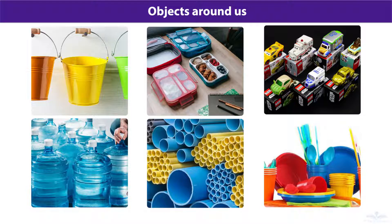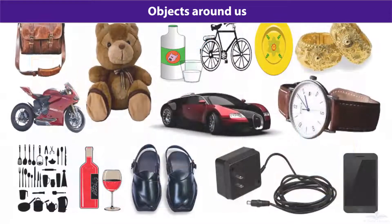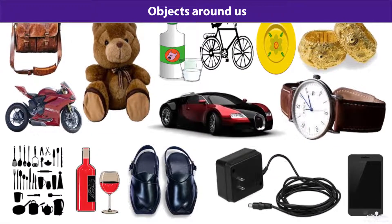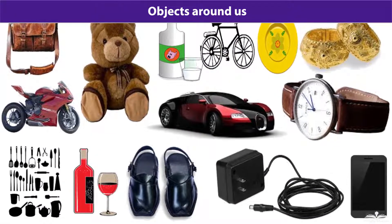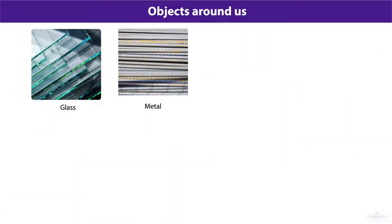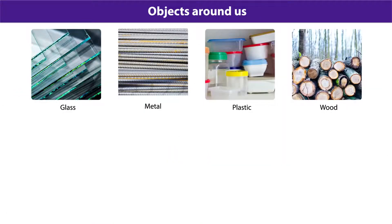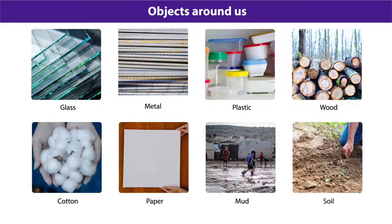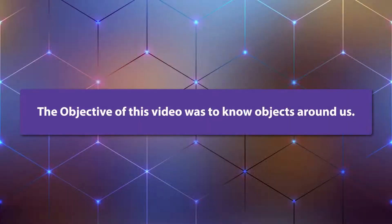There are so many ways to group objects around us. In these examples, we have grouped objects on the basis of their shape or the materials they are made from. All objects around us are made of one or more materials — these materials may be glass, metal, plastics, wood, cotton, paper, mud or soil, and many more. The objective of this video was to know about objects around us.